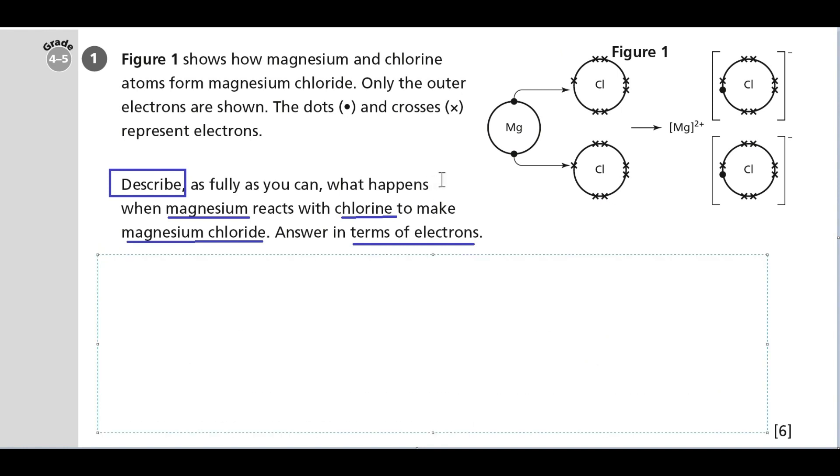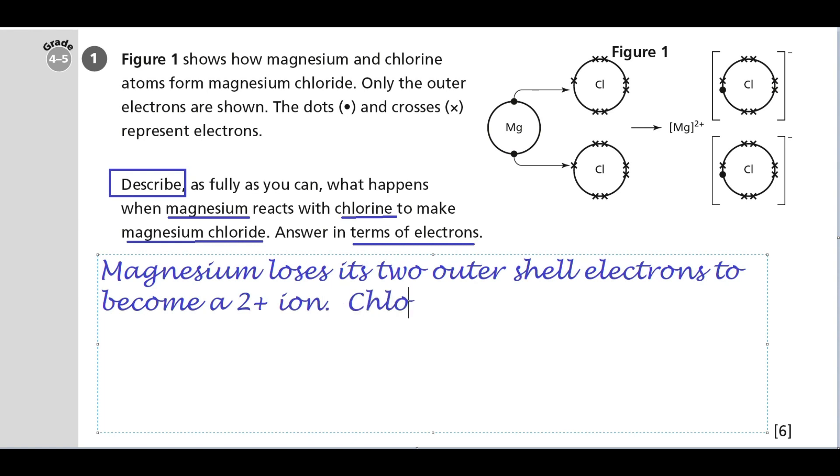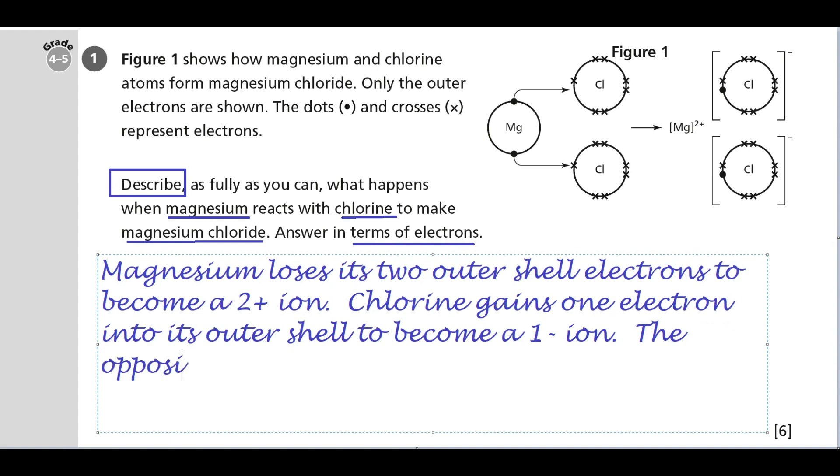So what's going on? First of all we're going to start with magnesium. Magnesium loses its two outer shell electrons to become a 2+ ion. Meanwhile, chlorine gains one electron into its outer shell to become a 1- ion. The oppositely charged ions attract each other and make magnesium chloride.